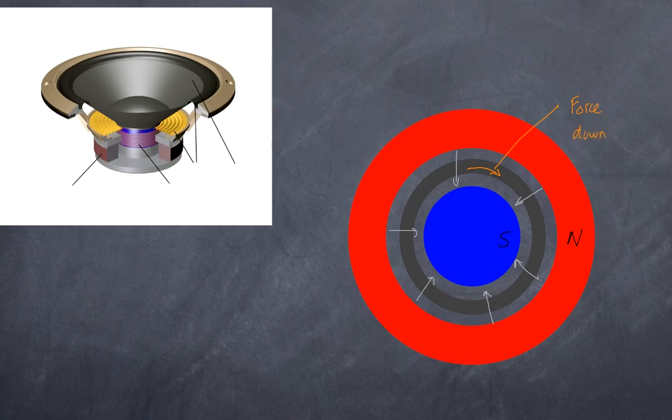However, what if we were to change the direction of the current? Imagine I have the current going in the opposite direction. What would the force be? Well, the same rules apply, but in this case, if the current is going in that direction, the force is going to be upward. So depending on the direction of the current that we put in the coil will determine the direction of motion of this coil.